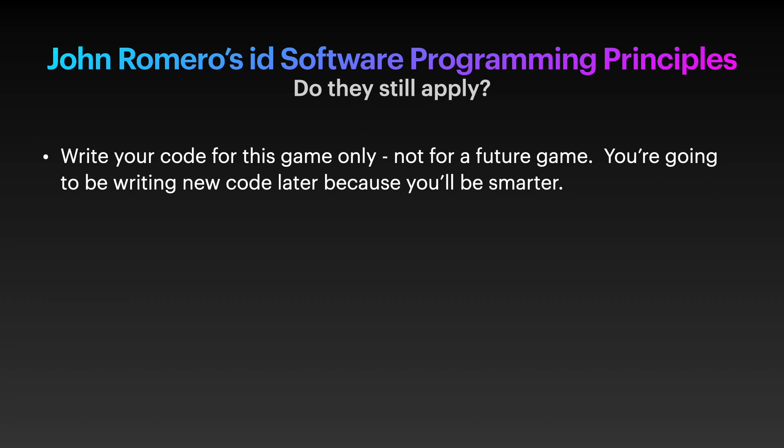Seventh, write your code for this game only, not a future game. You're gonna be writing new code later because you'll be smarter. I originally had mixed feelings about this, but I think now I understand what John Romero means. It's a waste of time to create functionality that won't be used in this game. You'll be smarter in the future and you may be rewriting that code later anyway.